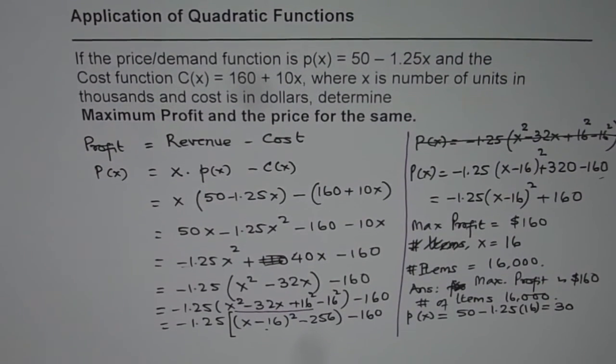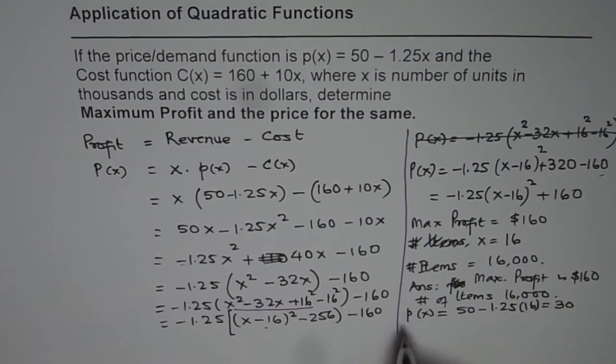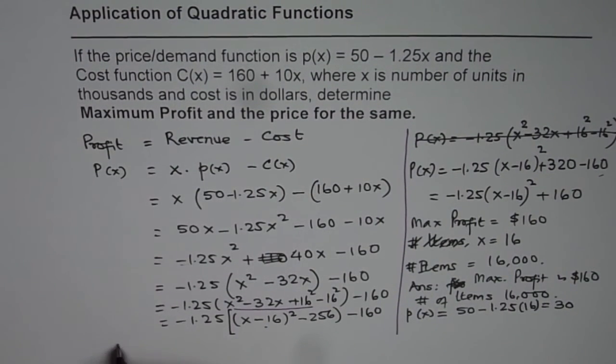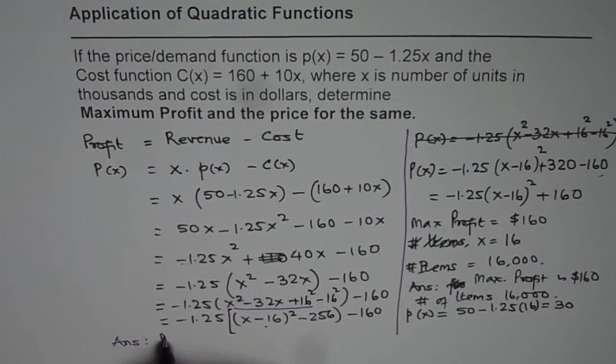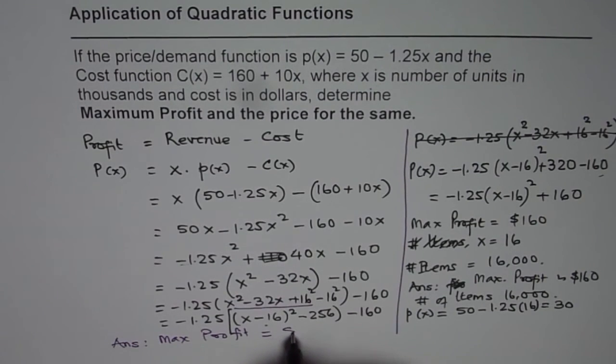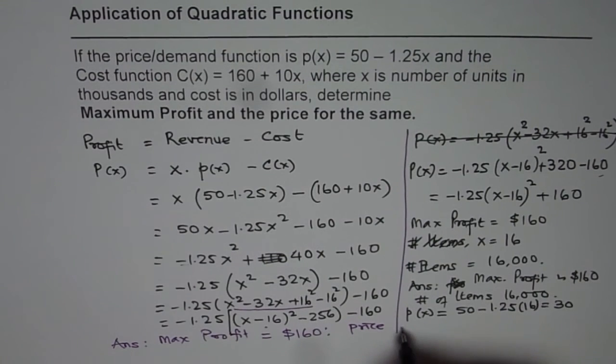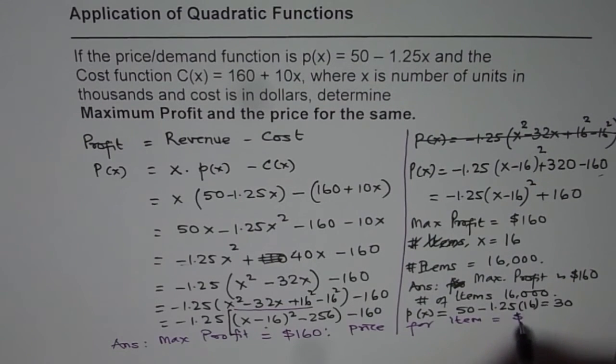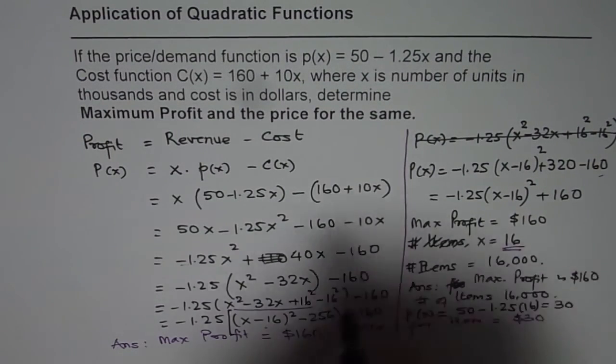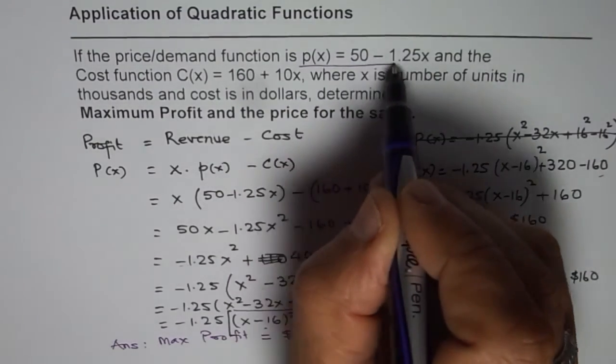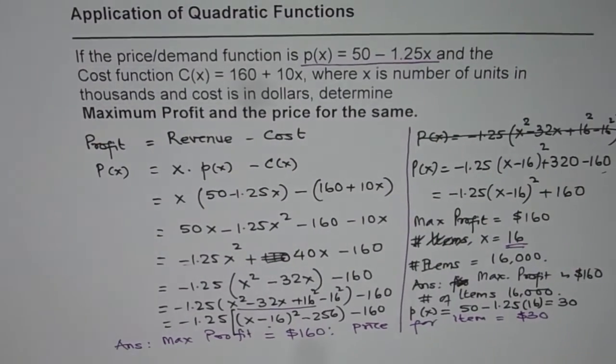So let me push the page a bit right now and answer the question here clearly. So we get our answer and the answer is maximum profit equals to $160. Price for item equals to $30. So you have to substitute this value in the price demand function, and then find the price.